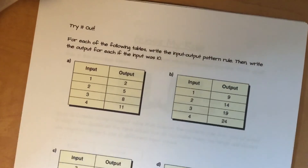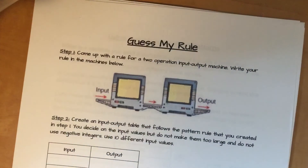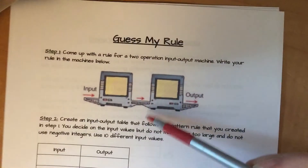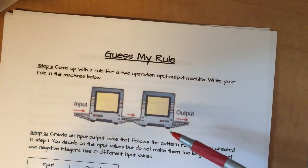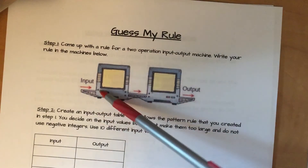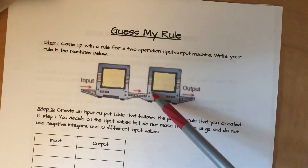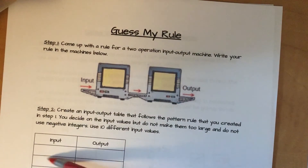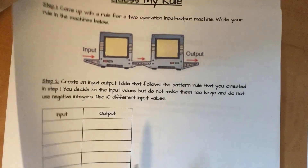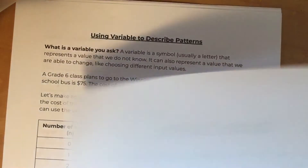This 'guess my rule' activity — I want you to complete it for our Zoom session. Make sure you've made cards where one side has your input value and the other side has the corresponding output. The easiest way is to come up with a rule for your two machines, then create your input and output values. If you're having trouble, please send me an email and I'll help you get started. It's really important that you have something for our Zoom meeting so you can play along.